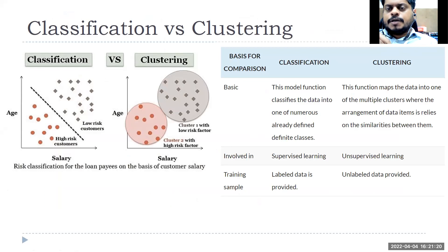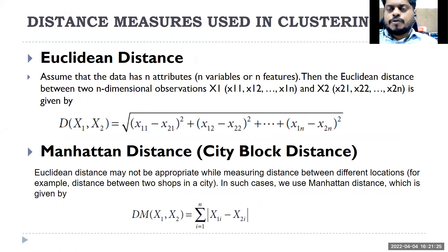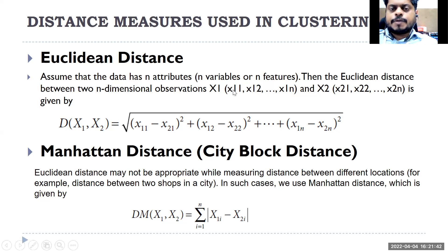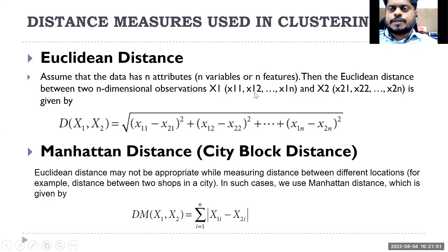In training, labeled data is provided; in clustering, unlabeled data is provided. So how do you measure the distance between two points? Let's say I have one customer who has a certain age — x11 is age, x12 is the frequency of purchase, how many times that person purchases on e-commerce sites. If we take only two variables, I have two customers, x1 and x2. One person's age is 23, and they purchase let's say three times on average per month on an e-commerce site.